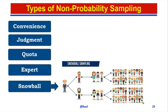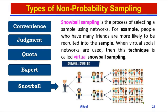The fifth type is snowball sampling. Snowball sampling is the process of sampling using a network. For example, people who have many friends are more likely to be recruited into the sample. When virtual social networks are used, this technique is called virtual snowball sampling.